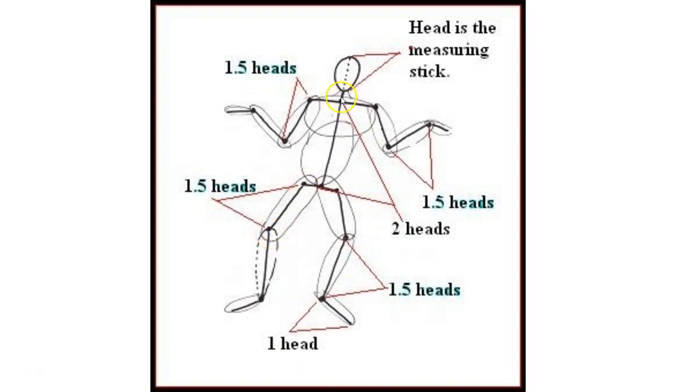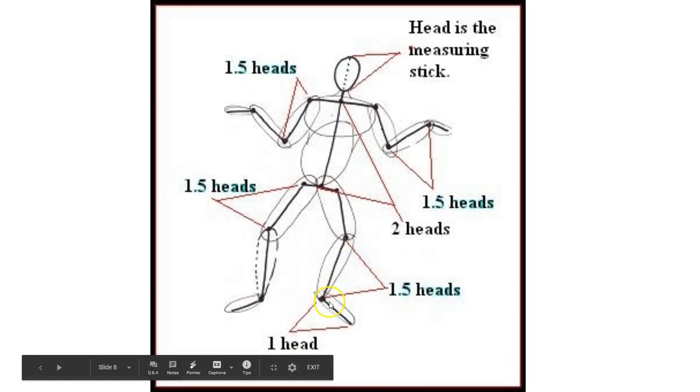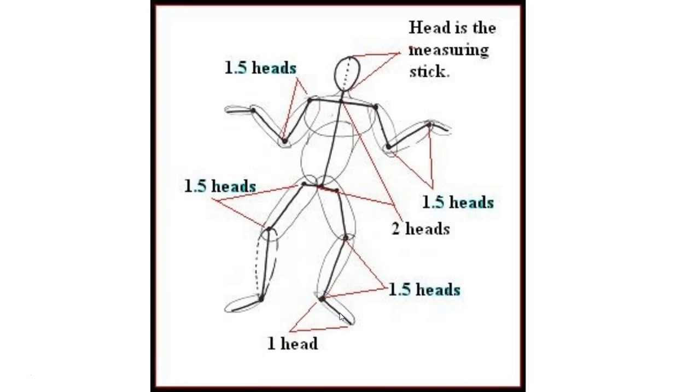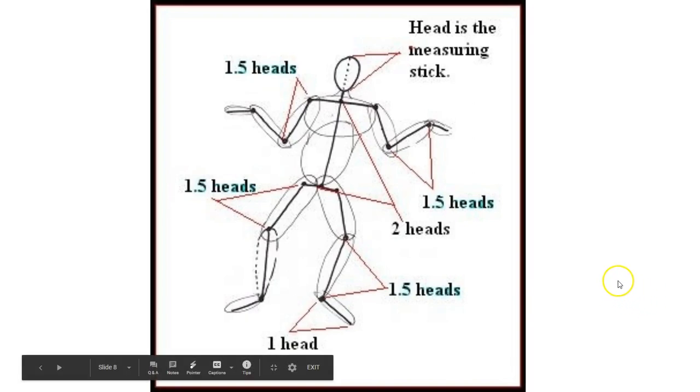It's two heads from your neck to the bottom of your torso. Your knee to your ankle is a head and a half. Your foot is equal to one of your head - if you put your foot on your head, they should be pretty close to the same size. Pretty cool.